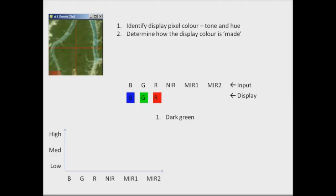The second step is to look at how that display colour is made. Green is made up of the green colour without any blue or red contribution, and the fact that it's dark means that it doesn't actually have a lot of green making up that colour. So what we're going to say here is that there is low red and blue contribution and a medium level of green to give us that colour that we see there.